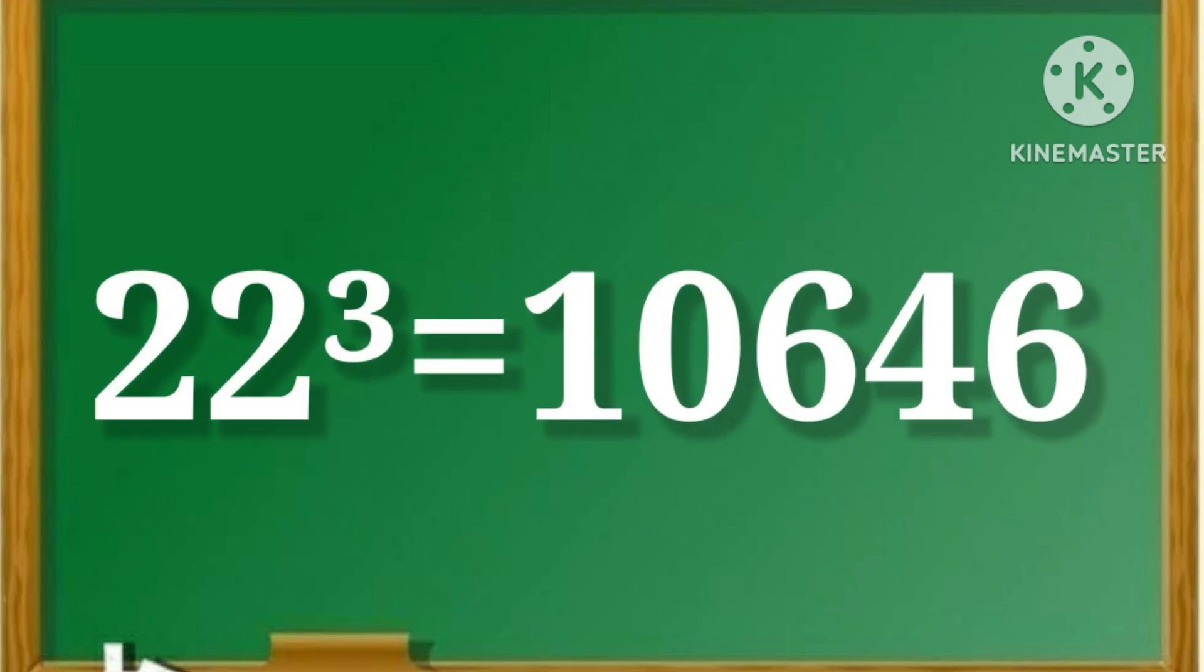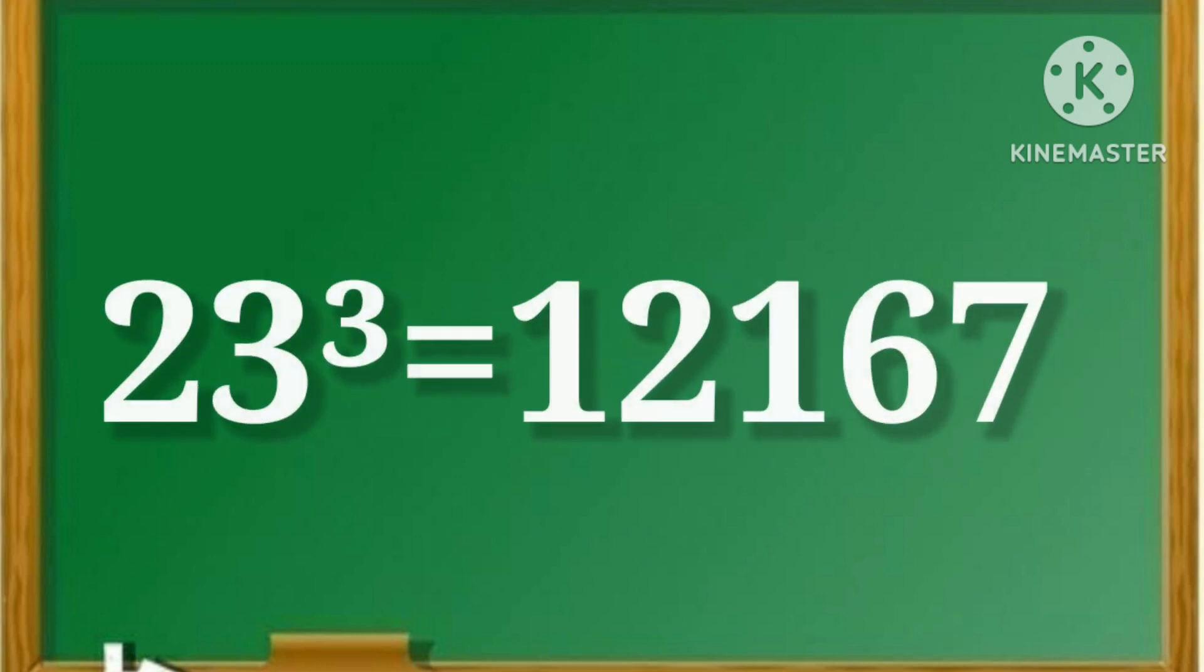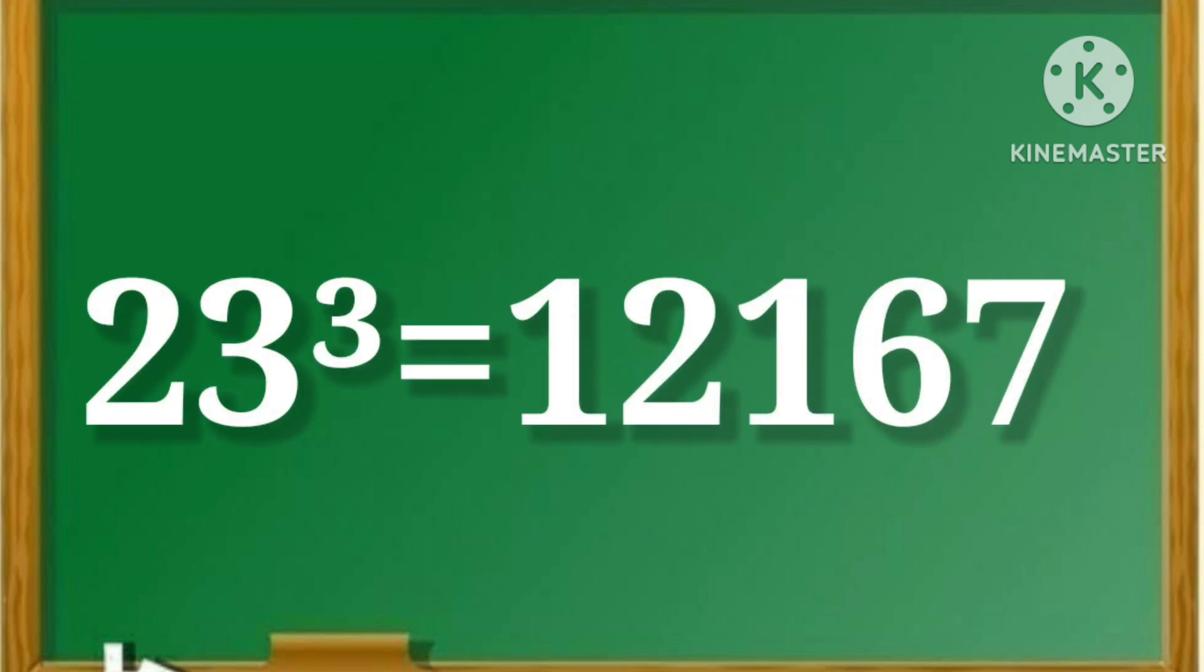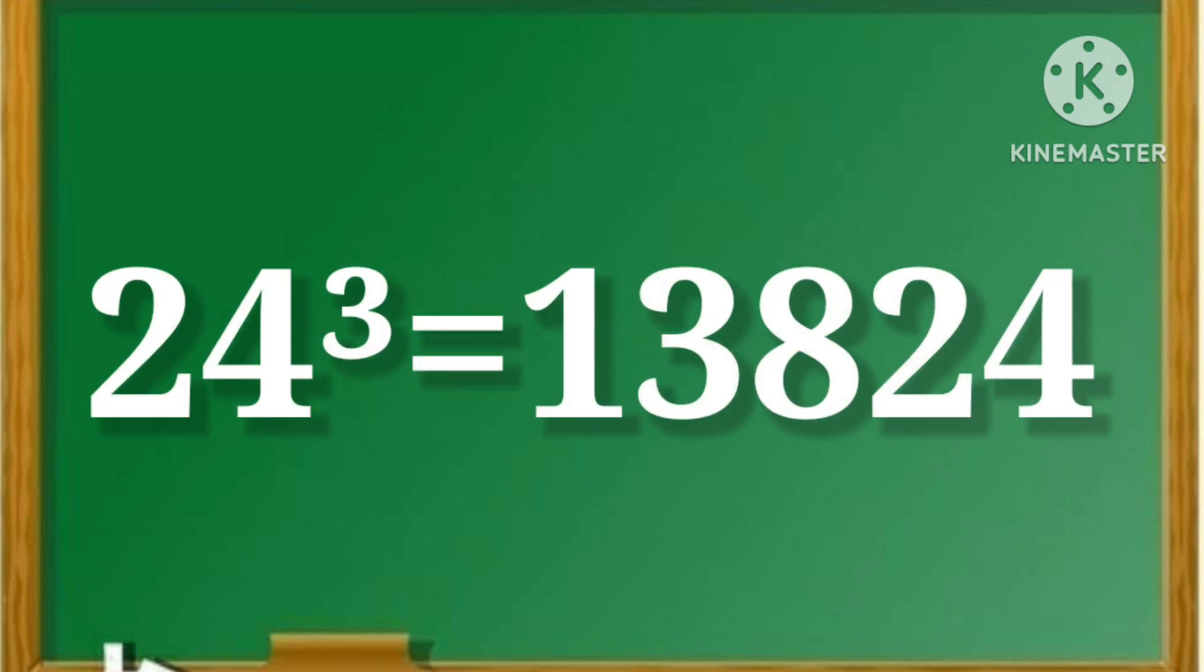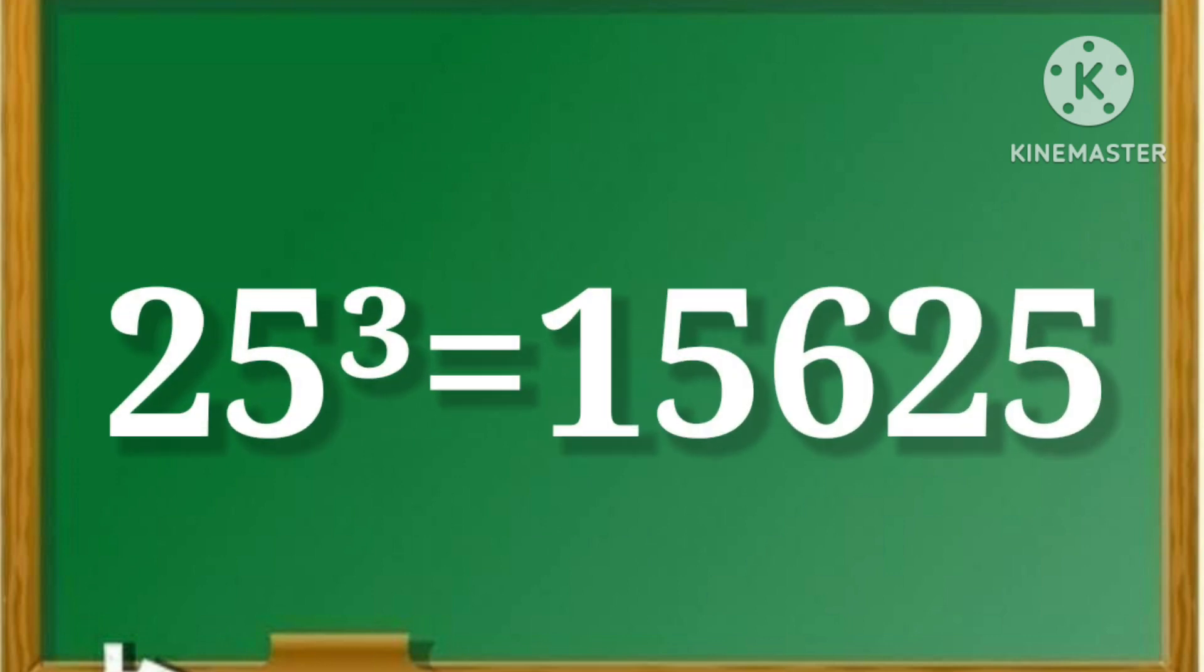22 cube is equal to 10646. 23 cube is equal to 12167. 24 cube is equal to 13824. 25 cube is equal to 15625.